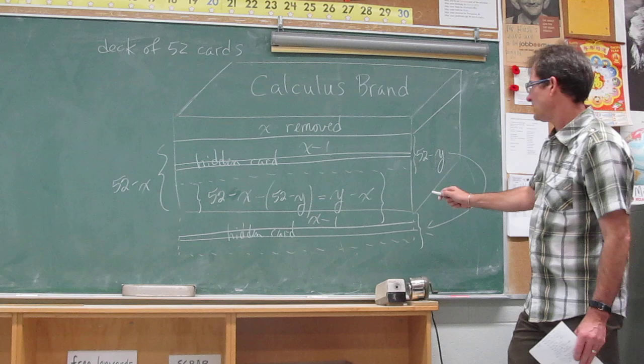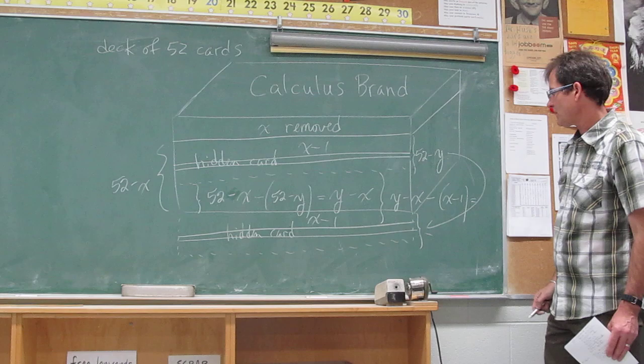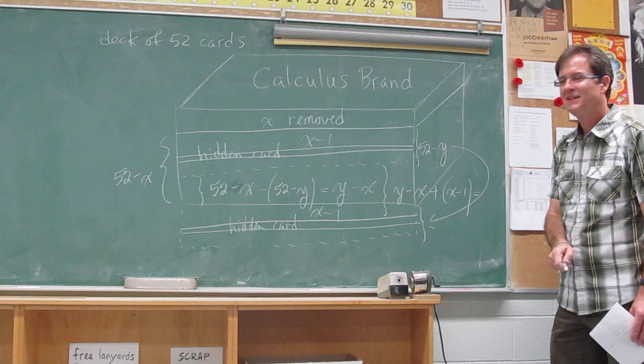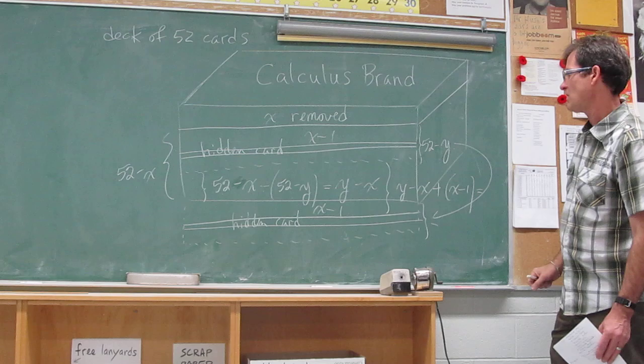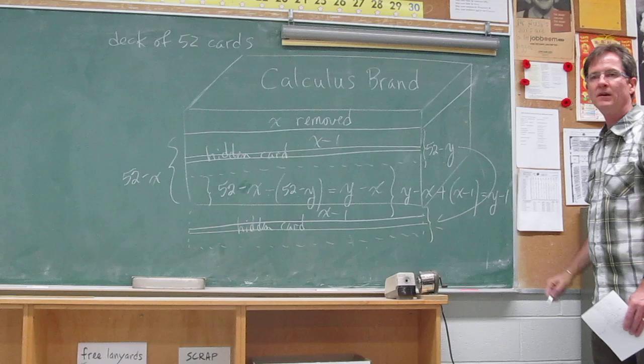That distance is Y minus X minus X minus 1. Sorry, plus X minus 1. It's these ones... Let me get this right here. Yeah, Y minus X plus X minus 1. That's right. Y minus X is from here to here. Of course, that equals Y minus 1.